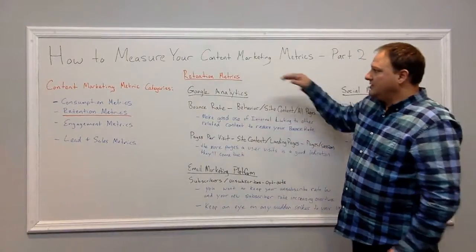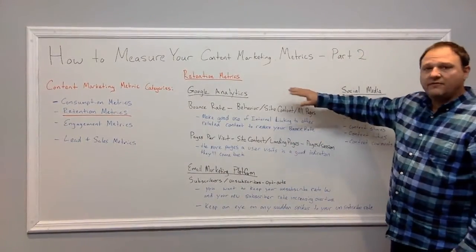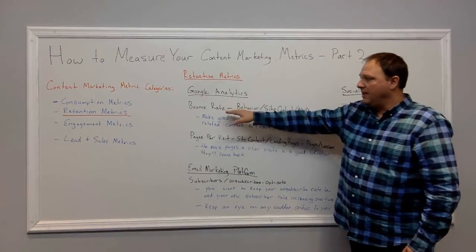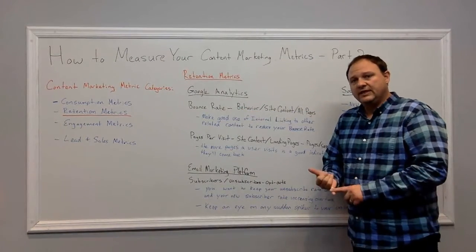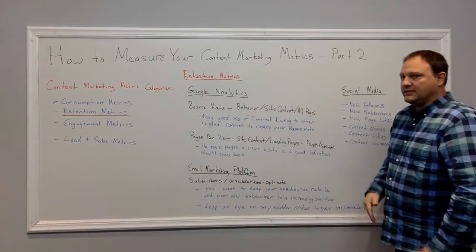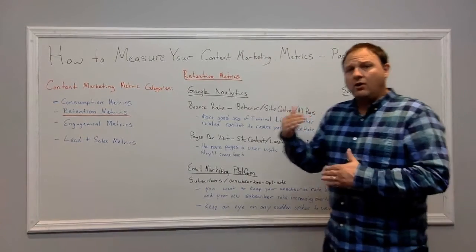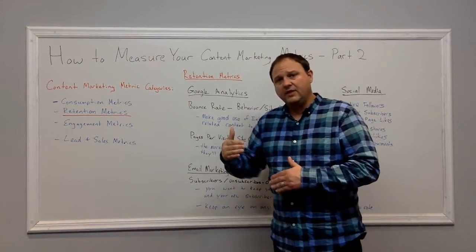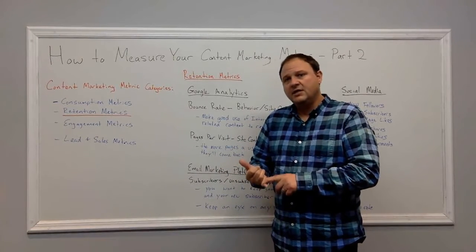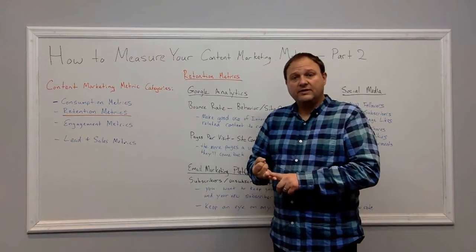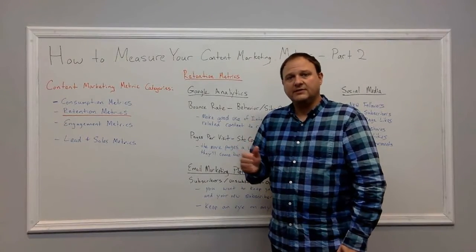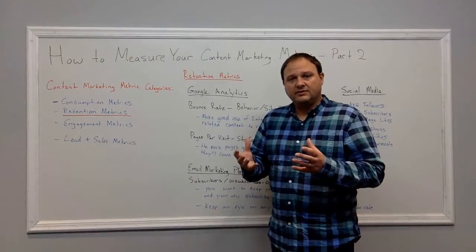Let's get into it. Retention metrics — the first one we're going to cover is Google Analytics. For retention metrics, you want to look at bounce rate. To get this in Google Analytics, go to Behavior, Site Content, All Pages. This will list out all pages of your content, and you can filter by content getting the most page views. You can also filter down by a specific URL by entering it in the search box, which will narrow it down to a specific page.